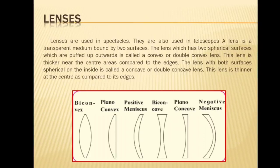A lens is a transparent medium bound by two surfaces. The lens which has two spherical surfaces that are puffed up outwards is called a convex lens or a double convex lens, as shown in the first diagram. This lens is thicker near the center as compared to the edges.